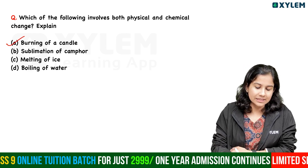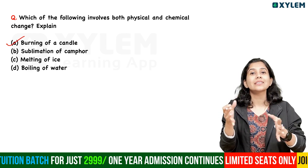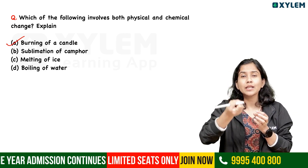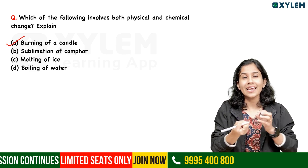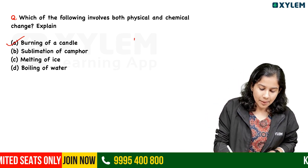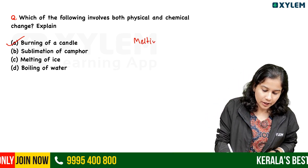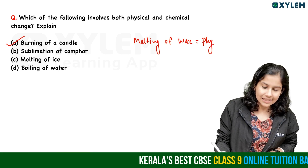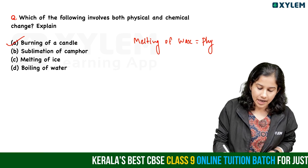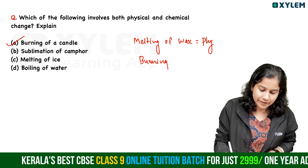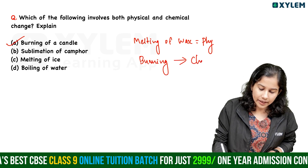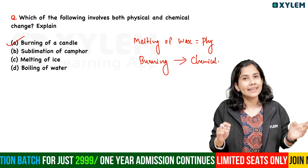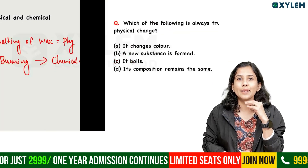The answer is burning of a candle. When we burn a candle, the melting of wax is a physical change, and the burning of the candle is a chemical change. So we are talking about two changes happening together. We also have an explanation for this.